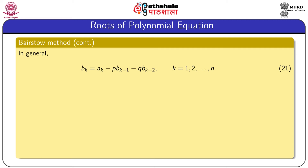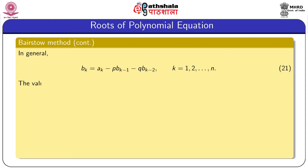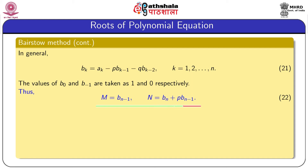In general, the b values are obtained by the recurrence relation b_k = a_k − p·b_(k-1) − q·b_(k-2), for k = 1 to n, with b_0 = 1 and b_{-1} = 0. With this notation, m = b_(n-1) and n = b_n + p·b_(n-1). These give the values of m and n in terms of the b's, and it is obvious that m and n depend on the b's.